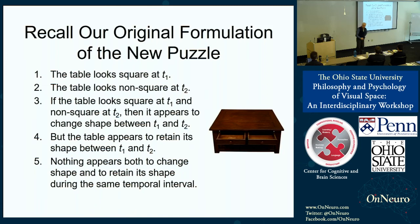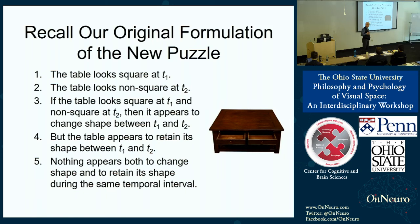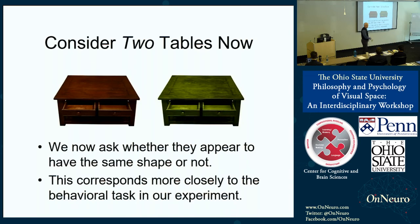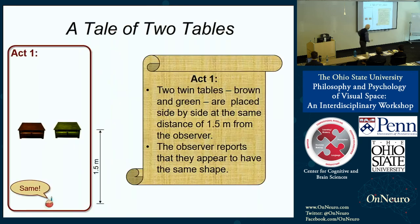Recall the original formulation as Declan presented it. The claims are about the appearance of a single table. As a psychologist, it's more comfortable to work with behavioral reports of appearances, and a very good way to get at that is to ask people to compare appearances and tell you whether they're the same or different. So let's go to two tables — twin tables with exactly the same shape, differing only in color. I'll refer to them as the brown and the green table. We ask whether they appear to have the same shape.